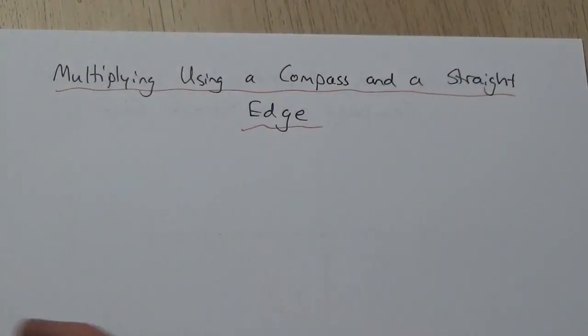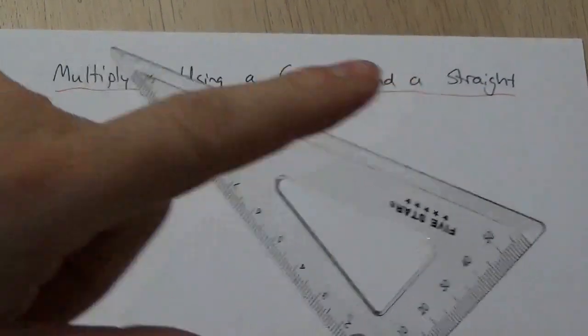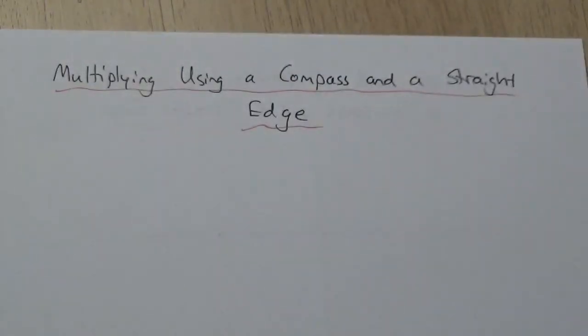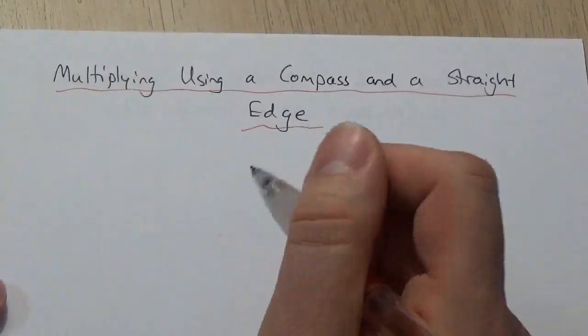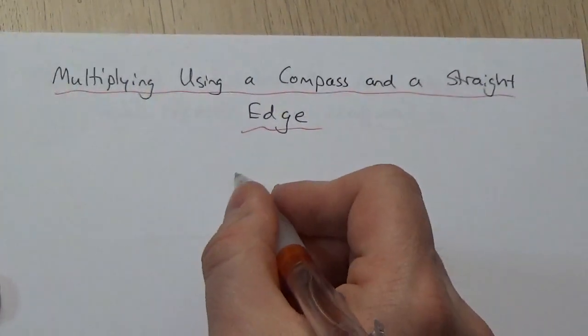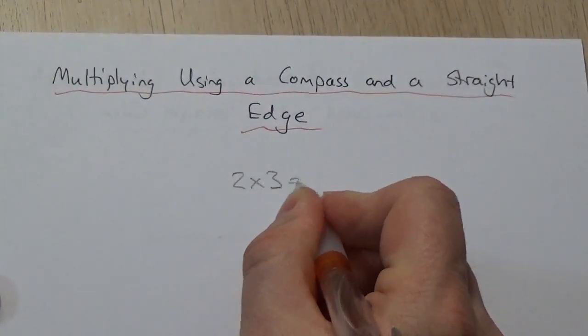Okay, hey everybody. Let's take a look at what it looks like to multiply with a compass and straight edge. So here's my straight edge, not using the ruler part, and here's my compass. So let's take a look at what it would look like to multiply. Let's multiply, make it easy here. We're going to multiply two by three and see what we get.